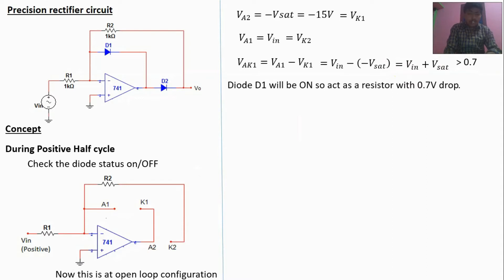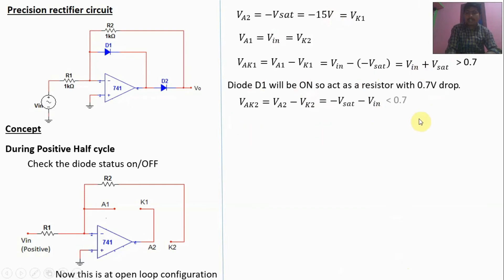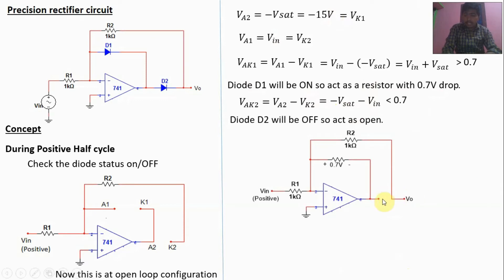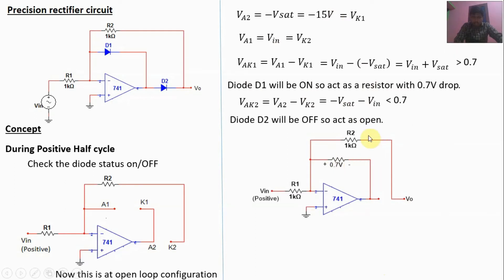For the voltage drop across diode D2: V-AK2 = V-A2 minus V-K2. V-A2 is minus 15 volts and V-K2 is V-in (positive). Substituting, V-AK2 = minus 15 minus V-in, which is always less than 0.7V in negative value. So diode D2 is in off condition — open. The equivalent circuit now has D2 open and D1 acting as a forward-biased diode with a 0.7V drop. The output is fed back to the input terminal, making this a feedback loop configuration.